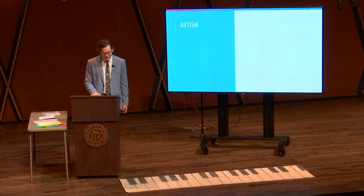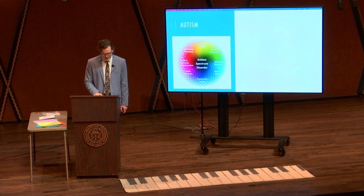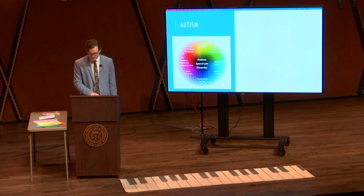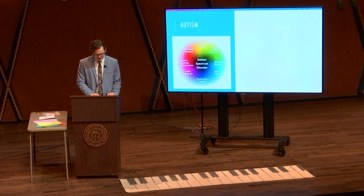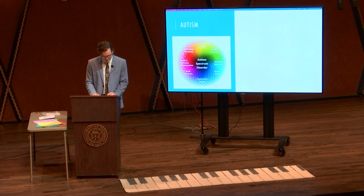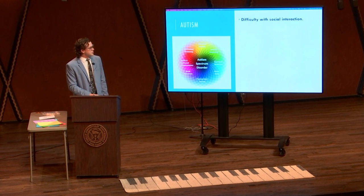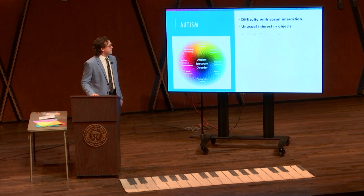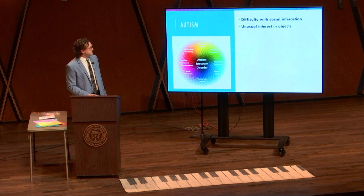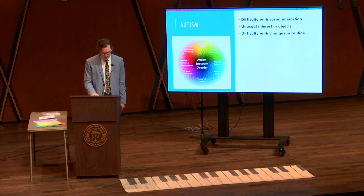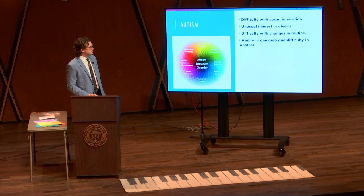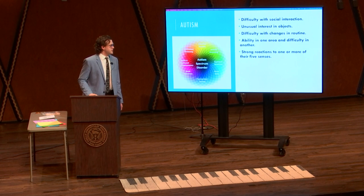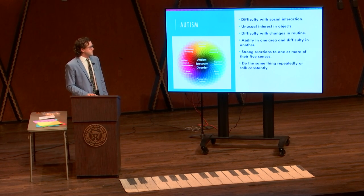Now on to the fourth special need. Autism or autism spectrum disorder refers to a broad range of conditions characterized by challenges with social skills, repetitive behaviors, speech, and nonverbal communication. According to the Center for Disease Control, autism affects an estimated one in 54 children in the United States today. Students may have difficulty with social interaction, unusual interest in objects, difficulty with changes in a routine, ability in one area and a lot of difficulty in another, strong reactions to one or more of their five senses, and may do the same thing repeatedly or talk constantly.